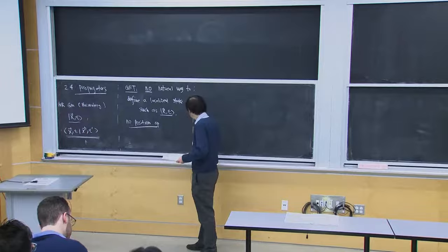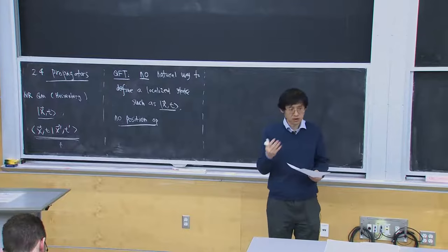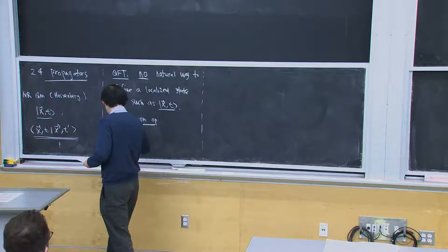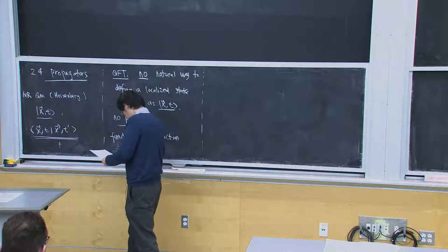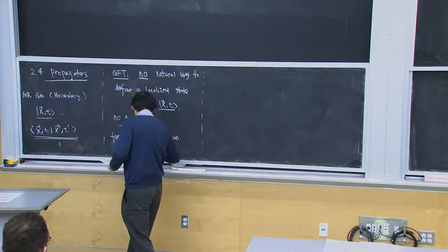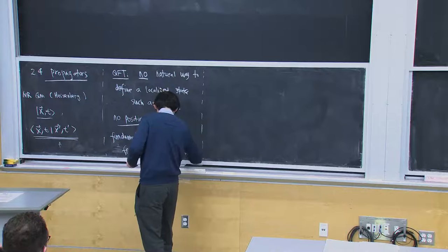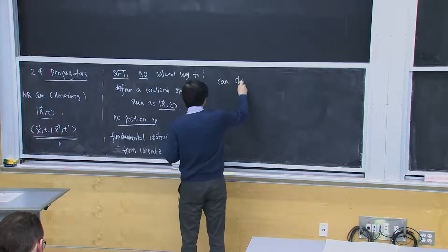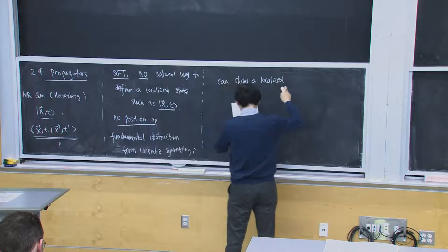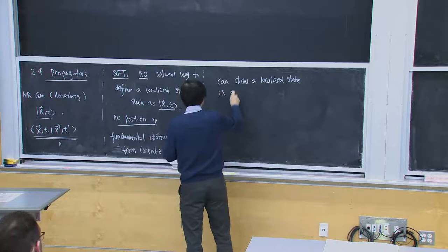And there's also a fundamental barrier — a fundamental contradiction with Lorentz symmetry. There's a fundamental obstruction from Lorentz symmetry. You can show that a localized state in space is not Lorentz covariant.